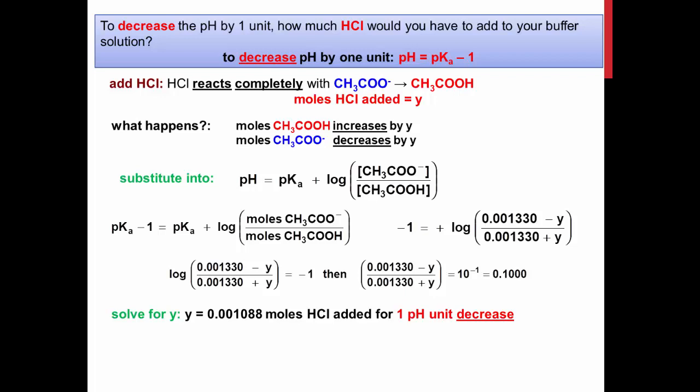Solving the expression for Y gives you the moles of hydrochloric acid that will cause a decrease in pH by negative one if added to the buffer.